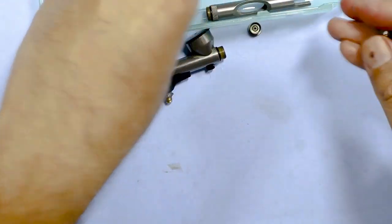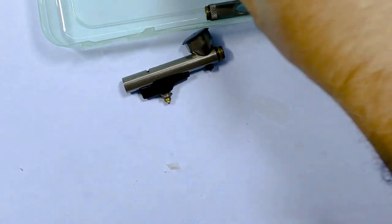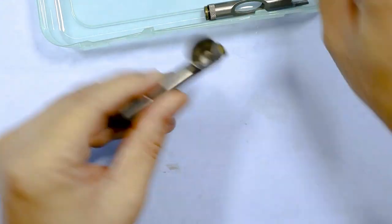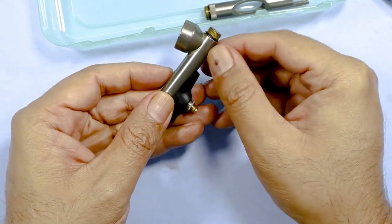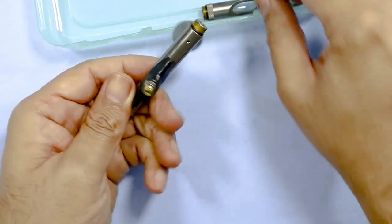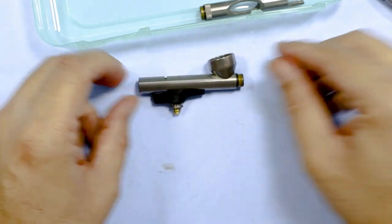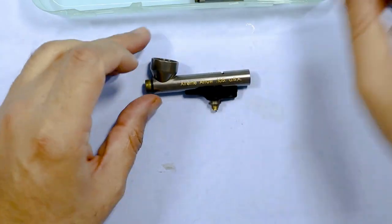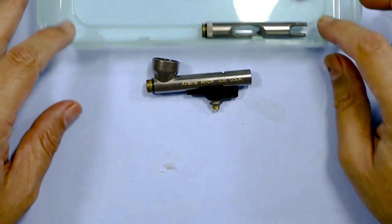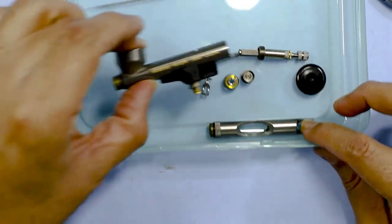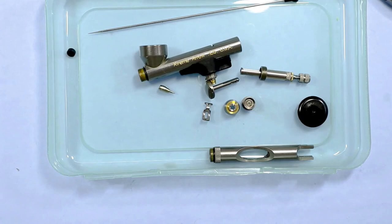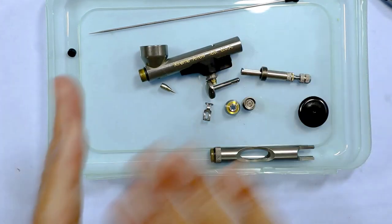And if you notice, everything came apart really nicely. Everything seems to be well made on this airbrush. There was no issues. I've had cheap Chinese knockoffs and just this simple test alone, they do not come apart. Things will break, twist, the threading goes bad, and that's not the case with this Patriot at all.